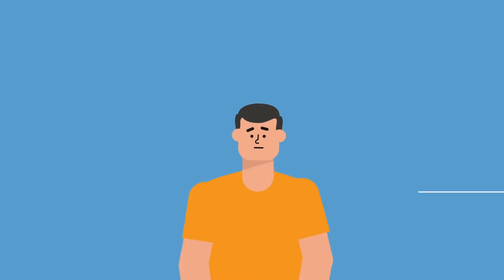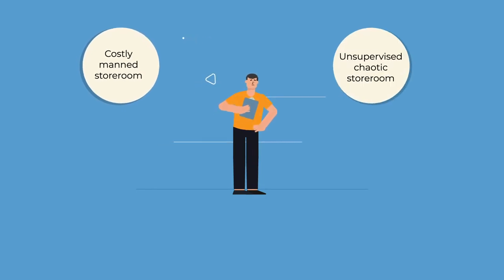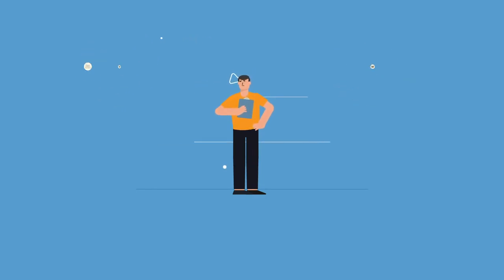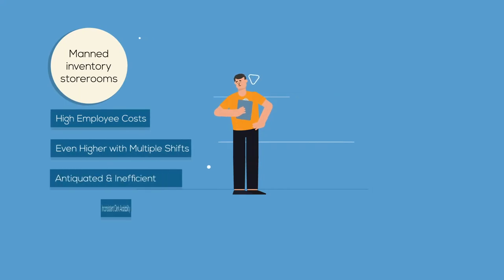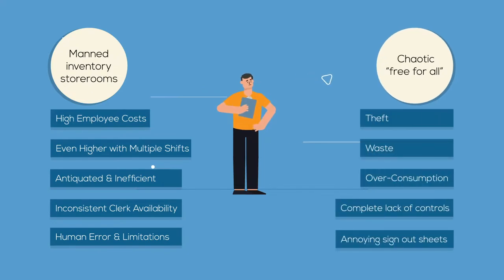How do you find the perfect balance between fully manned inventory storerooms and the chaotic free-for-all approach? Fully staffed systems are costly and inefficient at providing workers with the right tools when needed, and unmanned inventory storerooms result in overconsumption, waste, theft, and running out of stock.